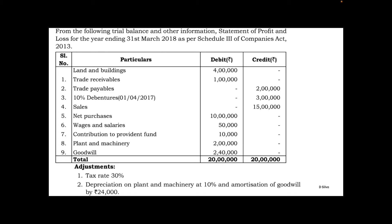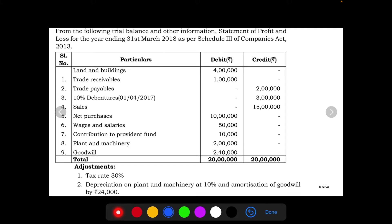In the trial balance we have: land and building, trade receivables, trade payables, 10 percent debentures, sales, net purchases, wages and salaries, contribution to provident fund, plant and machinery, and goodwill. We understand from the question that this is a trial balance.